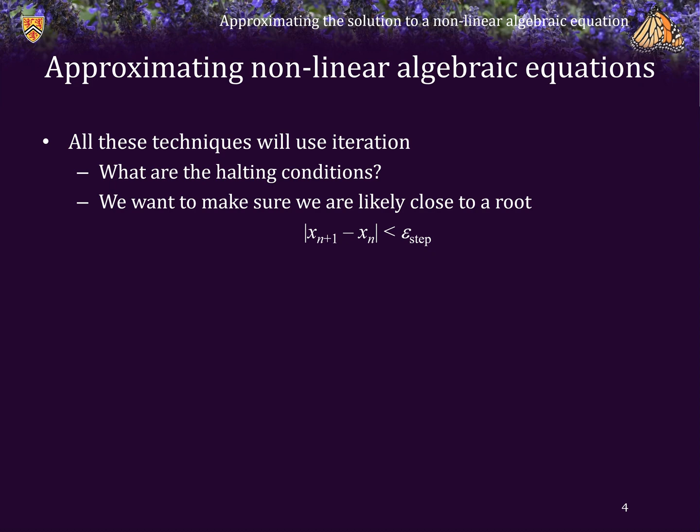However, we actually want to make sure that we are close to the actual root. So we should also ensure that the value of the function at the current point is actually sufficiently small. Consequently, we will check to ensure that the absolute value of the function evaluated at this next point is less than some epsilon absolute value.